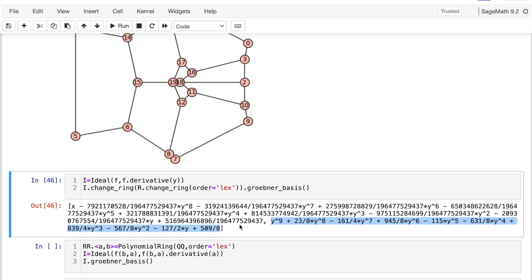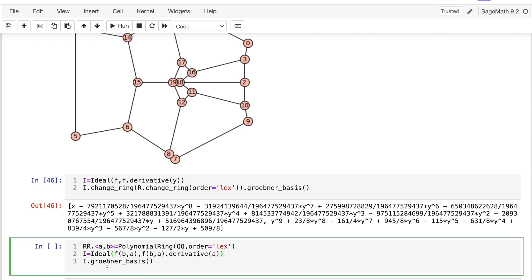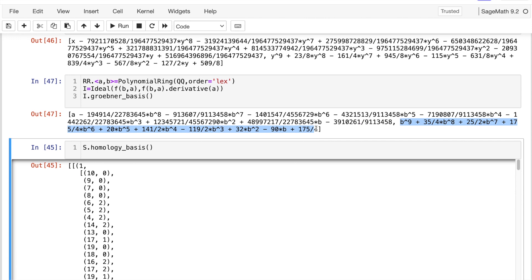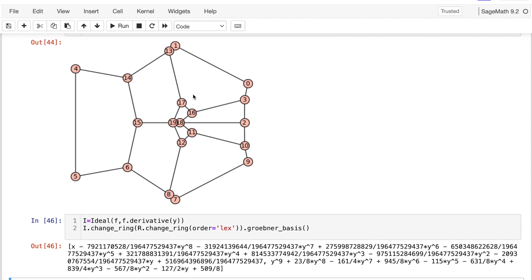This gives me the projection to the y-axis. To get the x-axis, I need to change the order of my lex. I don't know how to do this in Sage, so I just shifted the order of the variables like this. And now b is my new, b is x. So this gives me the ramification points on the x-axis. And at least we get a match here. There are nine chambers in this Voronoi diagram.